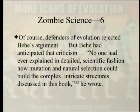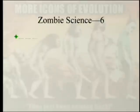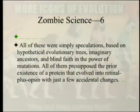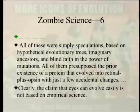Gehring and Ikeo themselves noted that the prototypical eye, as Darwin pointed out, cannot be explained by selection because selection can only drive evolution when the eye can function at least to a small extent — you must have that light-sensitive patch before Nilsson and Pelger's calculations even begin. Behe went on to argue we have good reason to conclude random events can't start the ball rolling, and that an irreducibly complex system such as the phototransduction cascade is evidence for intelligent design rather than unguided evolution. Defenders of evolution rejected Behe's argument, but Behe anticipated that criticism — no one had ever explained in scientific detail how mutation and natural selection could build these complex structures. All subsequent attempts were simply speculations based on hypothetical evolutionary trees, imaginary ancestors, and blind faith, presupposing the prior existence of a protein that evolved into retinal plus opsin with just a few accidental changes.